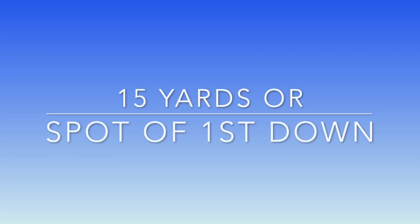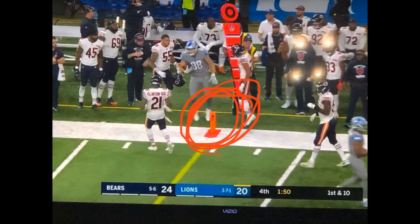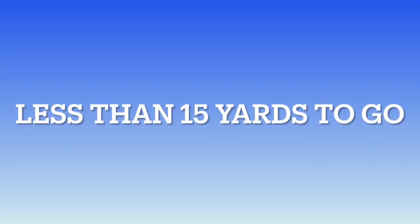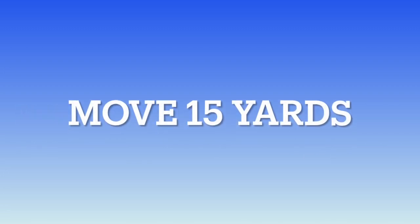But in my world the penalty is either going to be 15 yards, or the ball gets moved to the first down marker — whichever is greater. So if you have roughing the quarterback and it's less than 15 yards to gain, you get 15 yards. But if it's third and 20 and the team roughs the quarterback, basically they get 20 yards because the ball goes to the first down marker.